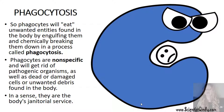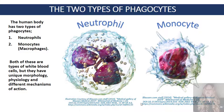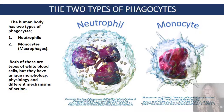In a sense, you can think of the phagocytes as the body's janitorial service. The human body has two types of phagocytes: the neutrophils, sometimes called microphages, and the monocytes, these are the macrophages. Both of these types of phagocytes are white blood cells, but each of them have unique morphology and physiology and different mechanisms of action.